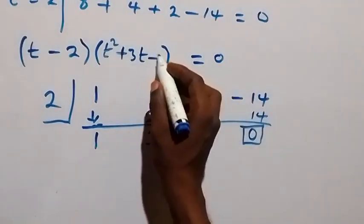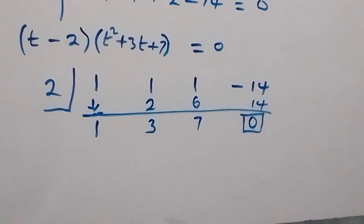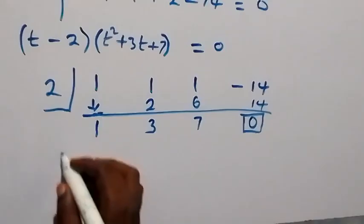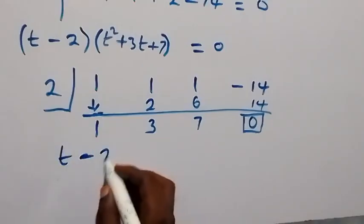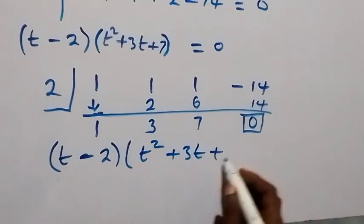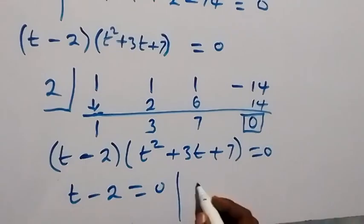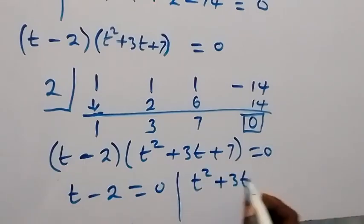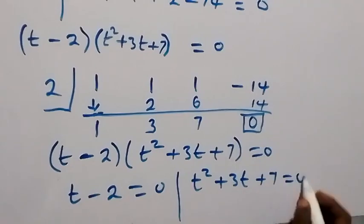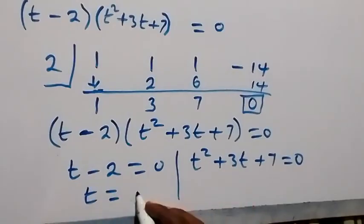So this will be t squared plus 3t plus 7 equals to 0. Therefore we have the polynomial factorized as t minus 2, multiplied by t squared plus 3t plus 7, equals to 0. From the first factor, t equals to 2.